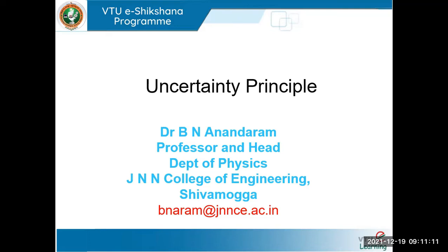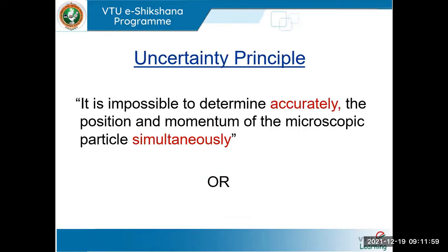Another important aspect: the uncertainty principle in quantum mechanics is applicable only for the simultaneous measurement of two physical quantities. We must select two physical quantities, say x and y, for a given system, and those parameters must be measured at the same time. Only then can we apply the concept of the uncertainty principle. This was introduced by Heisenberg.